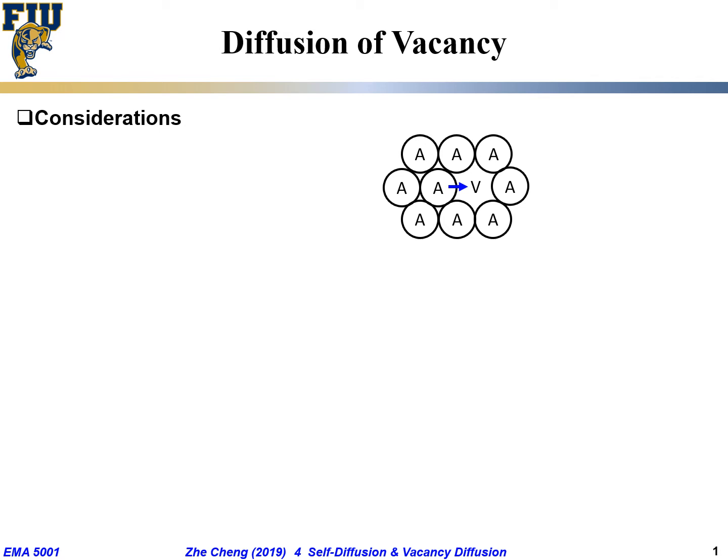Now let's move to so-called vacancy diffusion. So far we talked about interstitial diffusion and self-diffusion, which is our tracer diffusion — radioactive tracer — because the same element is difficult to measure directly. We get self-diffusion by using a so-called radioactive isotope tracer. Now let's think about the diffusion of a species called vacancy: empty stuff going.